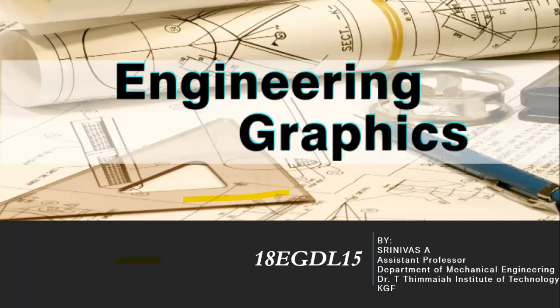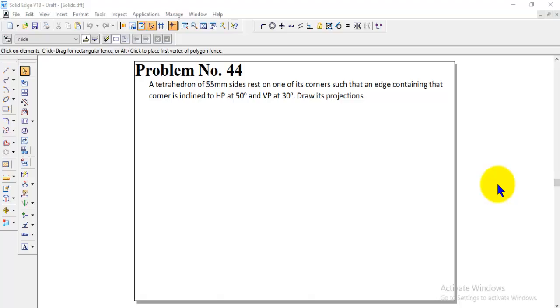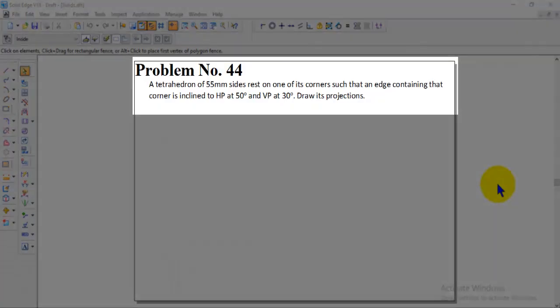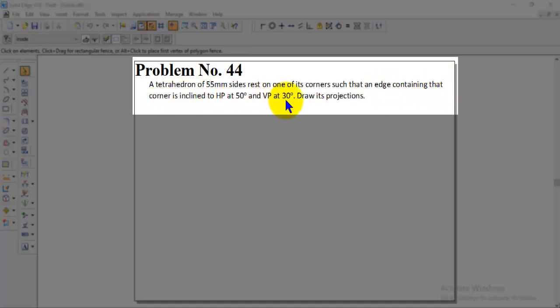Welcome back to engineering graphics class. Today's session we will discuss how to solve the projection of solids problem using Solid Edge software. Let us discuss problem number 44. A tetrahedron of 55mm sides rests on one of its corners such that an edge containing that corner is inclined to HP at 50 degrees and VP at 30 degrees. Draw its projections.